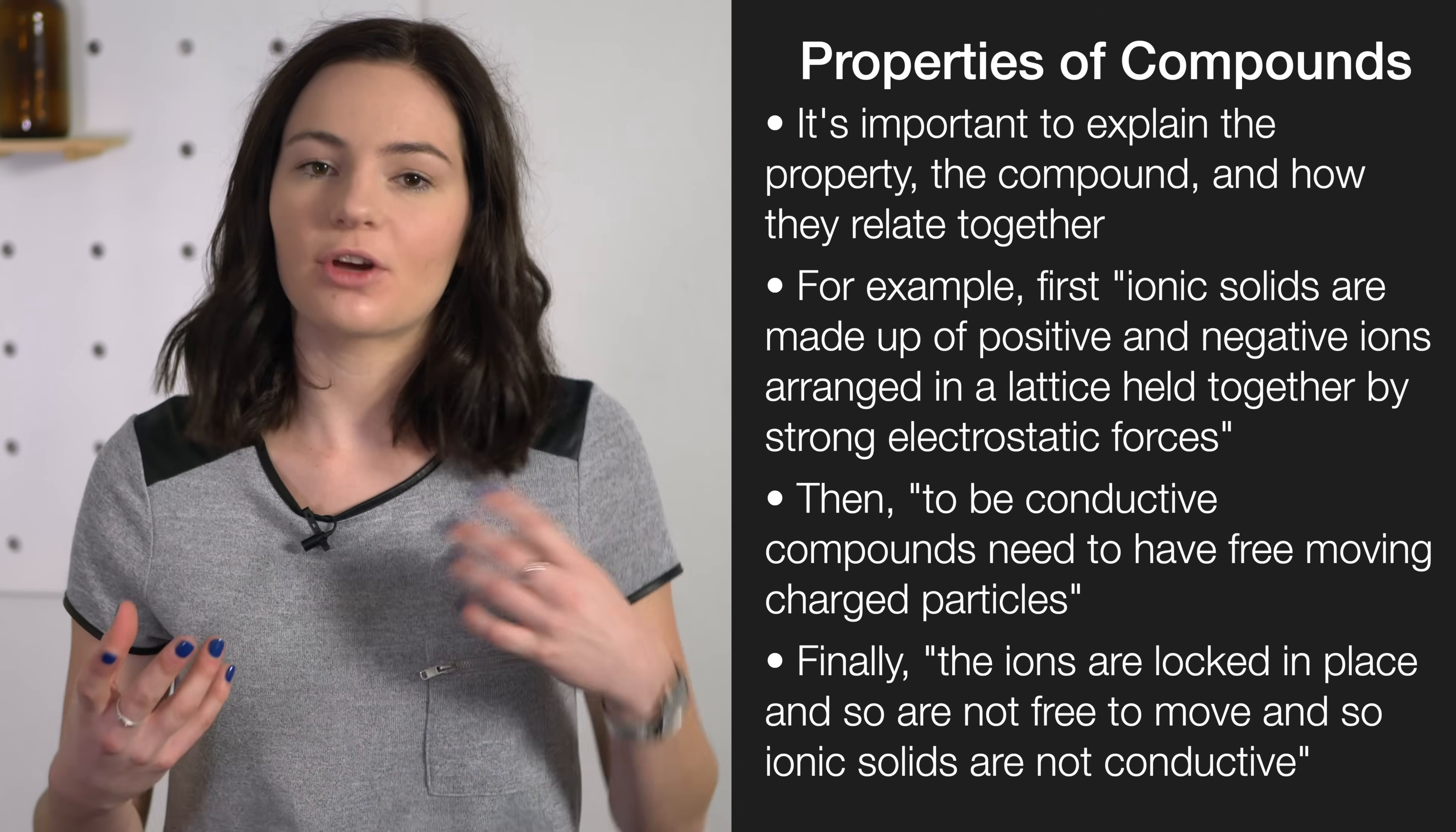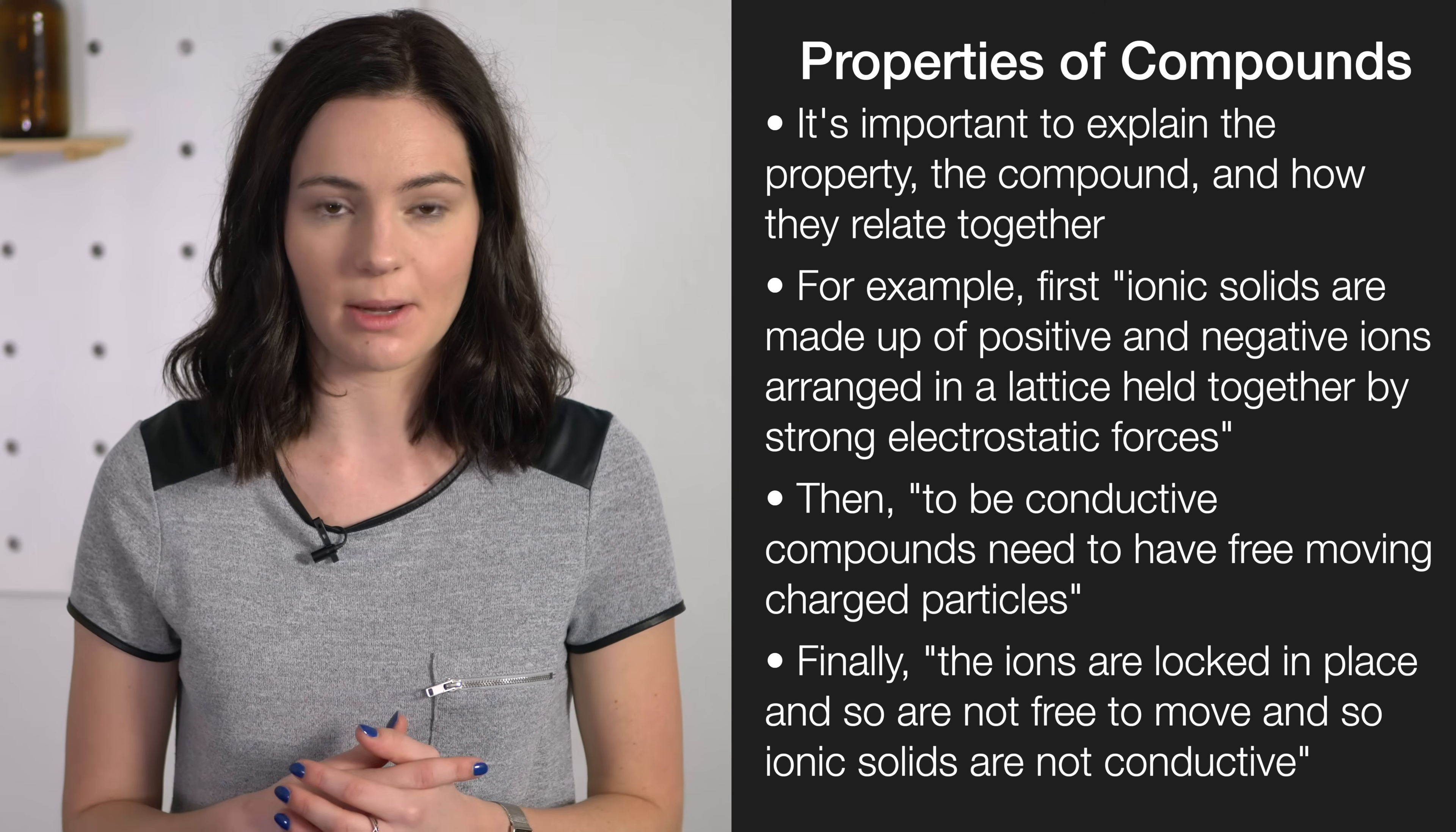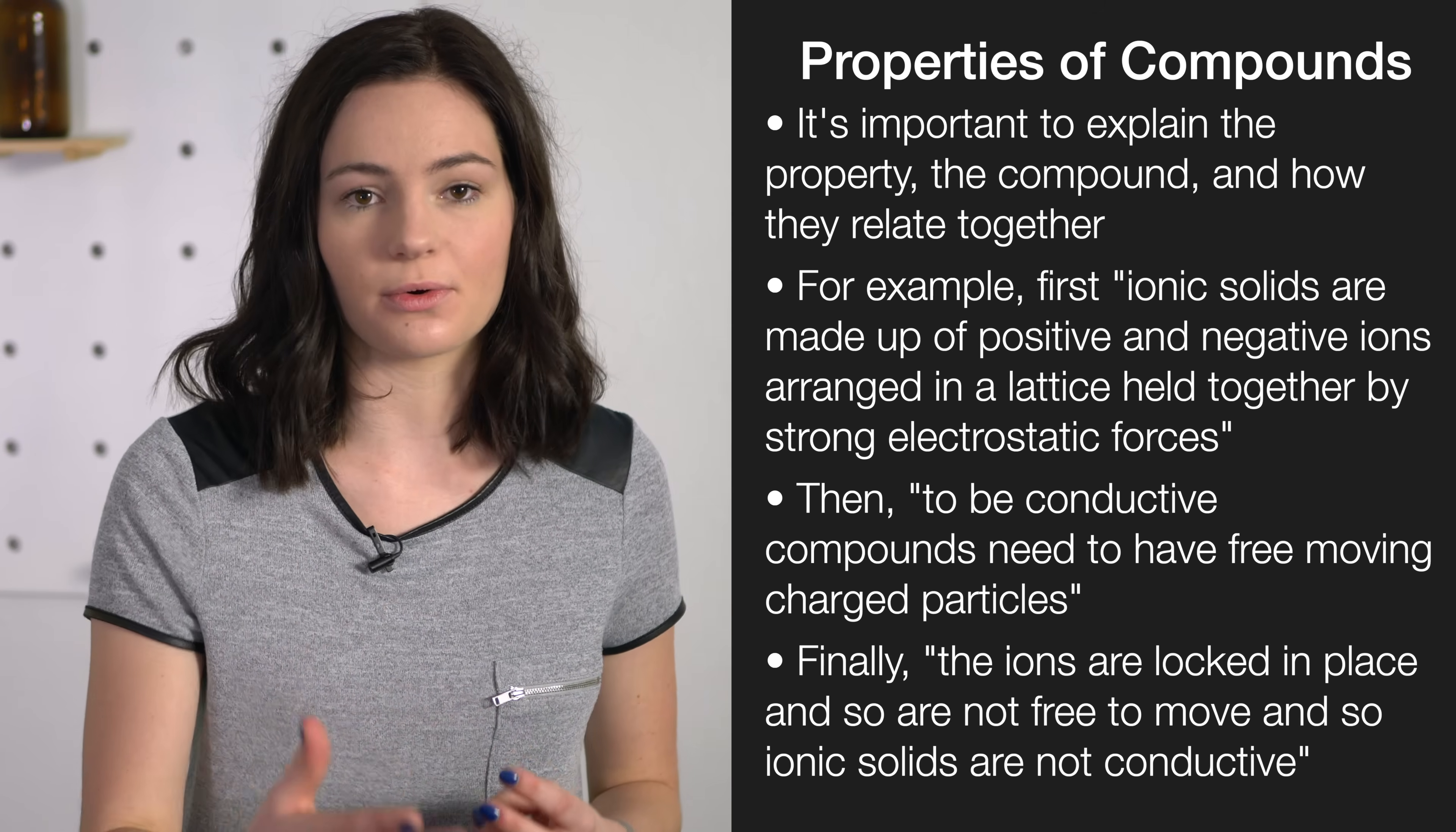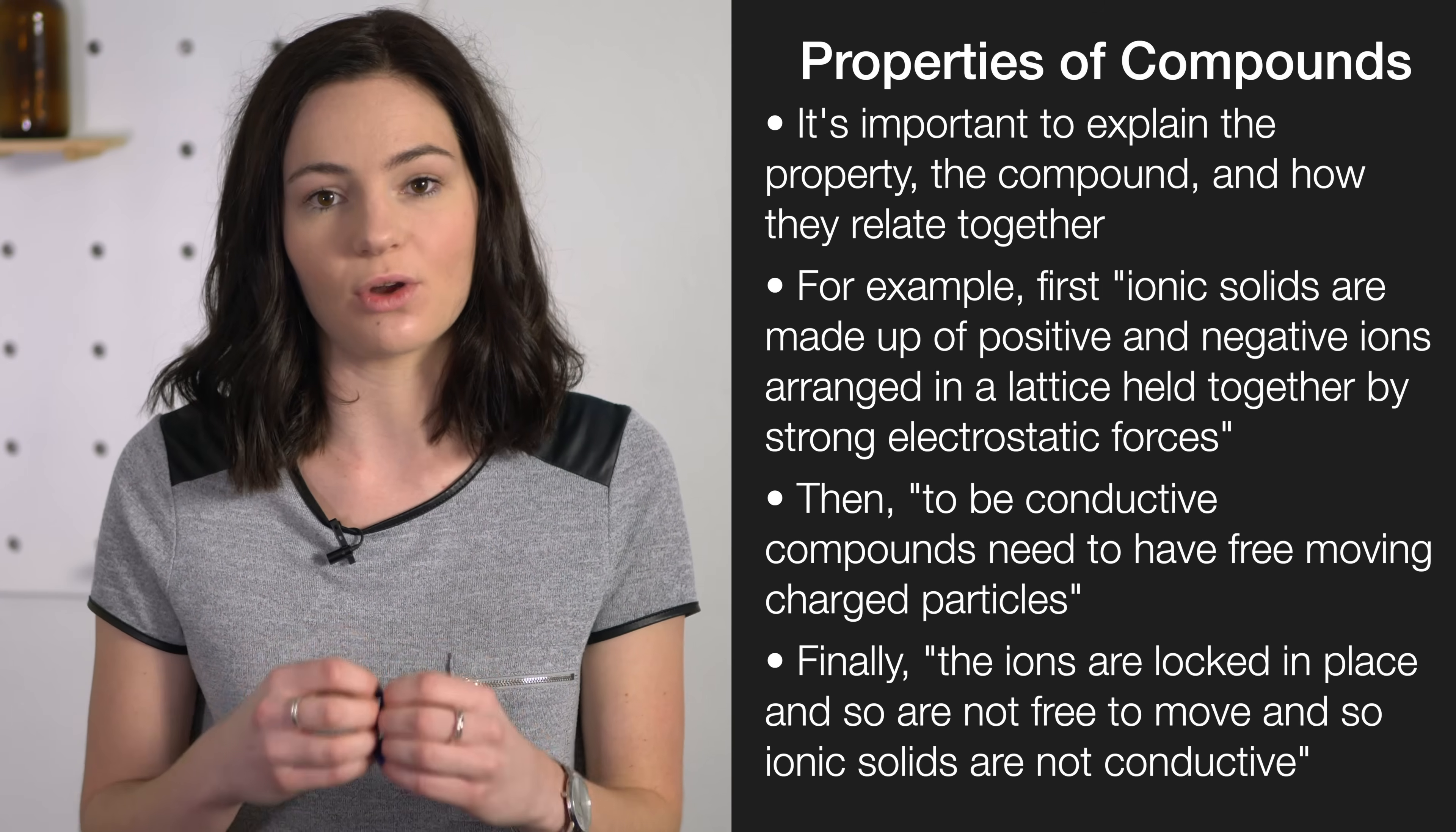When explaining properties of compounds, it's important to explain the property, the compound, and how they relate together. For example, if we were to explain why a solid ionic compound is not conductive, we would first have to explain what an ionic compound is. An ionic compound is a strong lattice of positive and negative ions held together by strong electrostatic forces. Conductivity is where electricity can flow through a compound due to free-moving charged particles. Therefore, an ionic compound is not conductive because their charged particles are not free-moving.